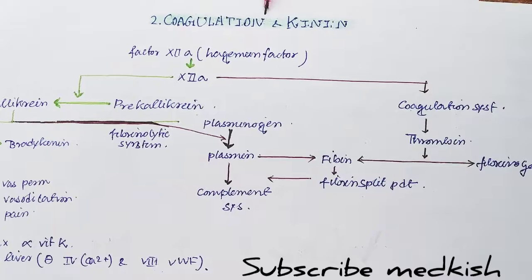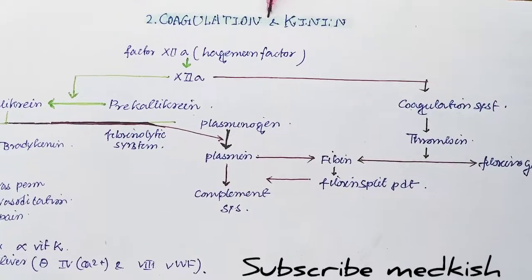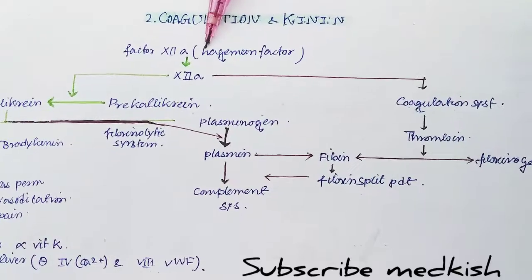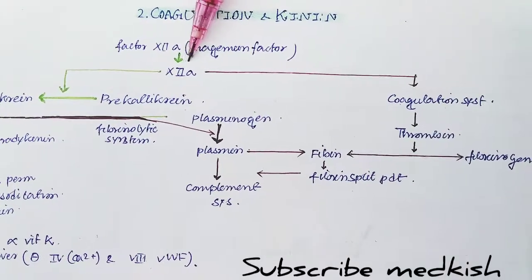Next, plasma derived chemical mediators are the coagulation factors and the kinase. The factor 12a, that is the Hageman factor, is activated and will stimulate.